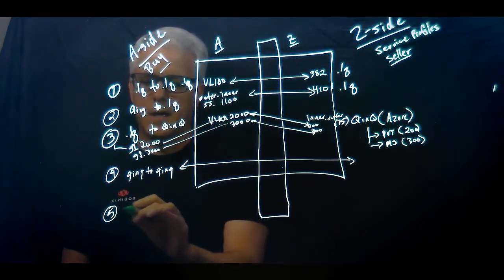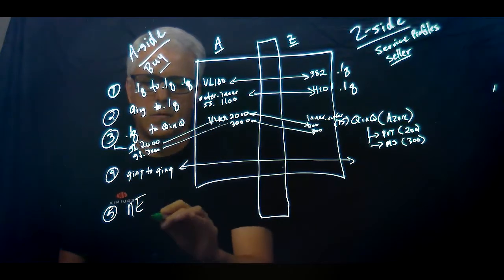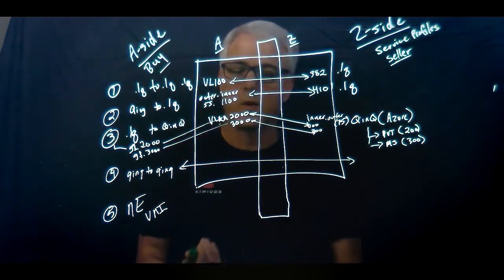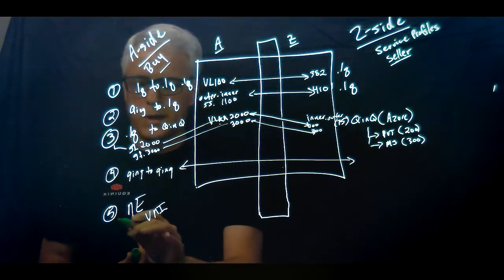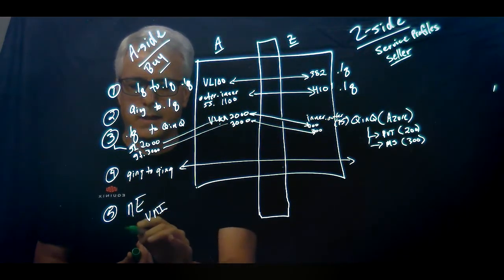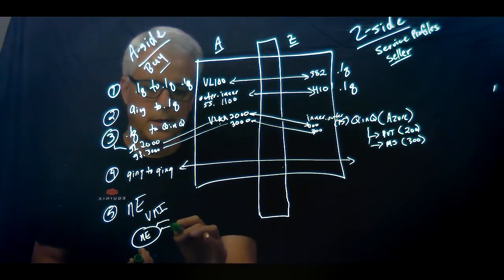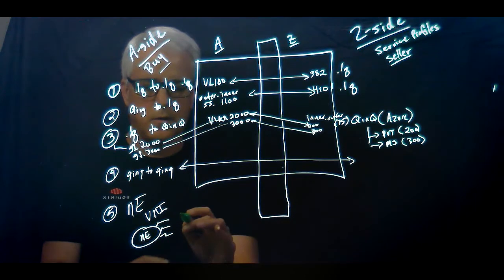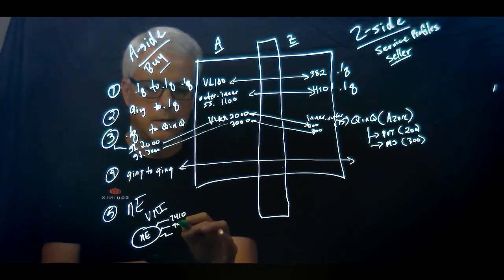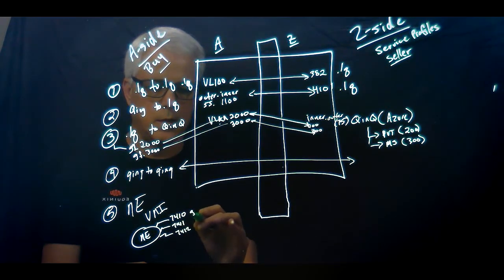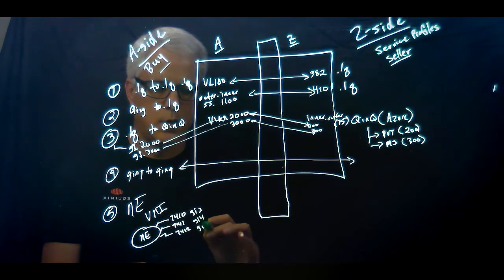All right. So the fifth scenario is Network Edge. Network Edge is going to use a VNI construct, a VXLAN network identifier. So when you spin up a Network Edge device here, each interface that gets spun up is going to have its own unique VNI. So let's just call it 7410, 7411, and 7412. And these will map to Gig 3, Gig 4, and Gig 5.